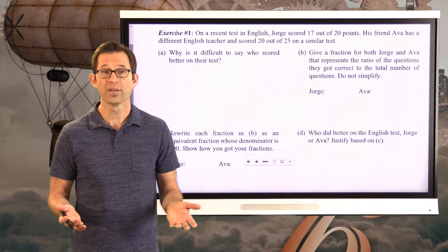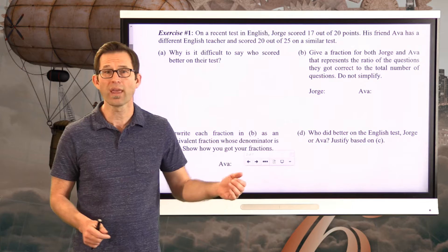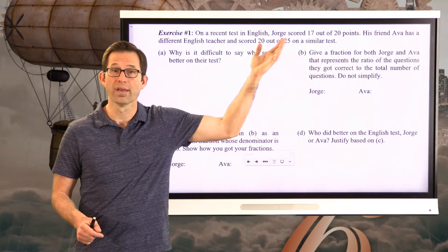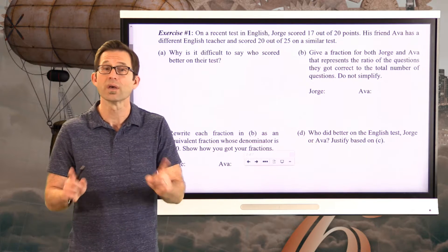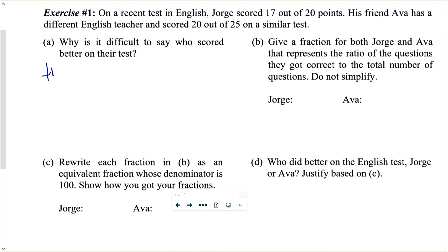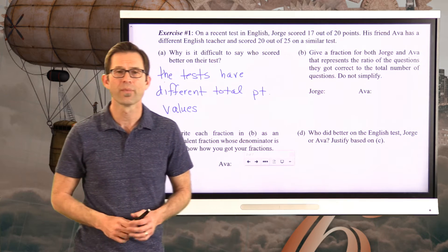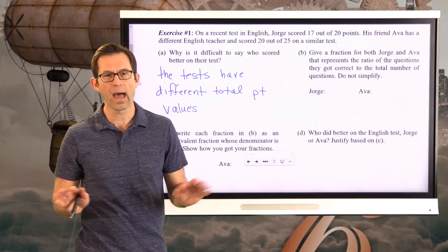Well, it's really simple. The tests had a different number of total points. So we can't just say Ava scored 20, Jorge scored 17. I mean, if they were taking the same test, then unequivocally we could say that Ava did better because she scored more points. But the plain fact is the tests have different total point values. One of them's worth 20. One of them's worth 25. So what we really want to do is compare apples to apples.